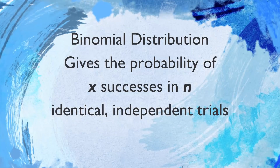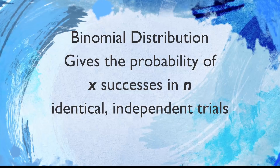The binomial distribution gives the probability of getting x successes in n identical independent trials. Each time we draw a ball from one of those three or four buckets, that's an independent trial that's identical to the previous draw. What we mean by success is whether they're pulling out the ball that we want. Let's look at the binomial formula and see how that works.